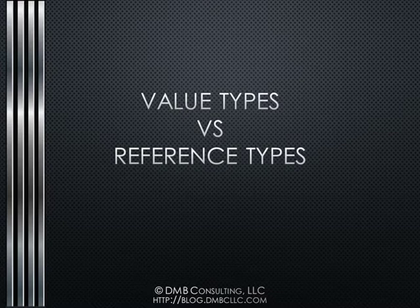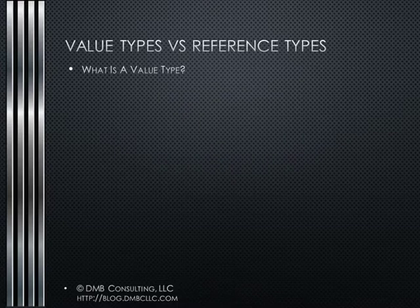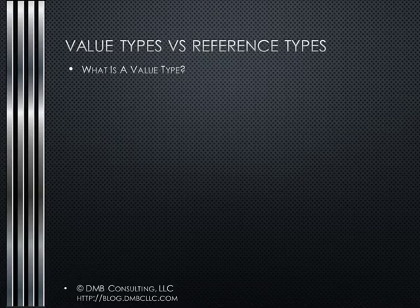I'll start from the outside and move into what's happening in memory. The first question we need to quantify is: what types in .NET are referred to as value types? Common value types are the integer, double, float, decimal, and boolean — what we typically refer to as primitives. But there are other types that are also value types: enums, structs, and DateTime, because it's a struct, are also value types.